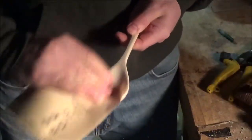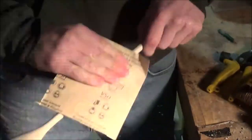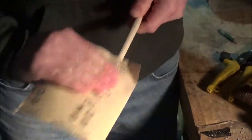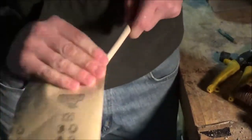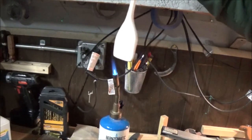Then, I sanded everything up to 220 grit. After each step up in grit, I would wet the grain with water, and that makes the surface rough. You sand it back down, and you get a really smooth finish.